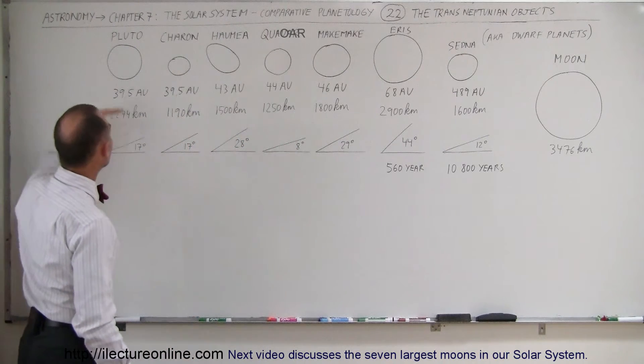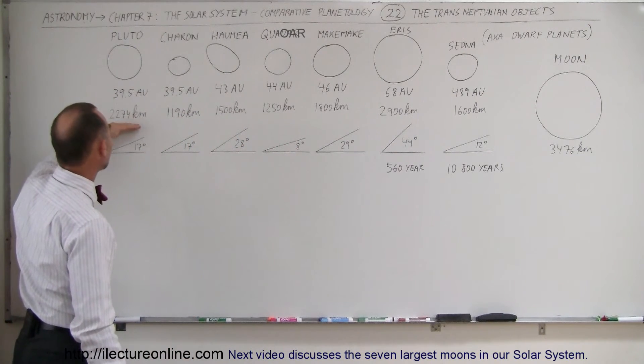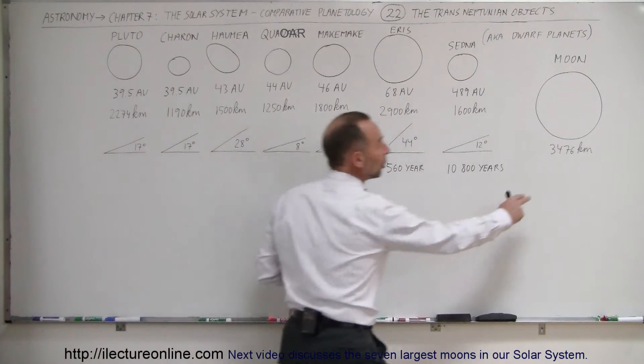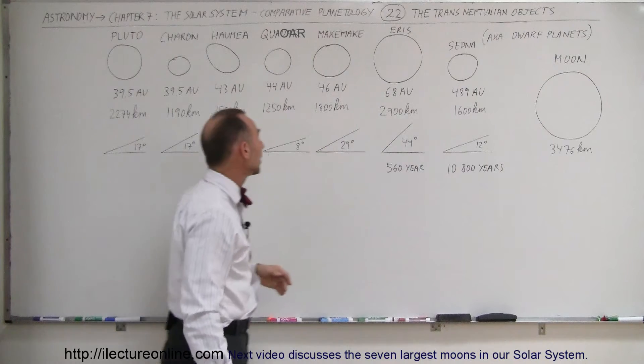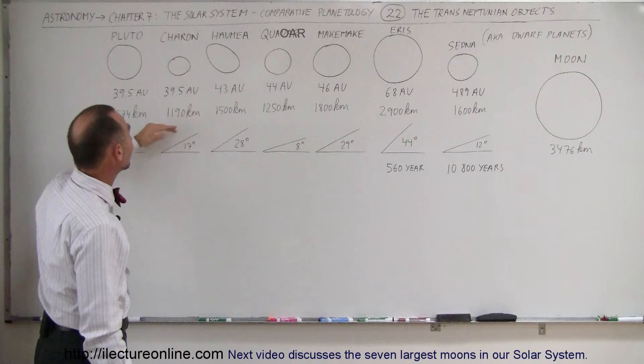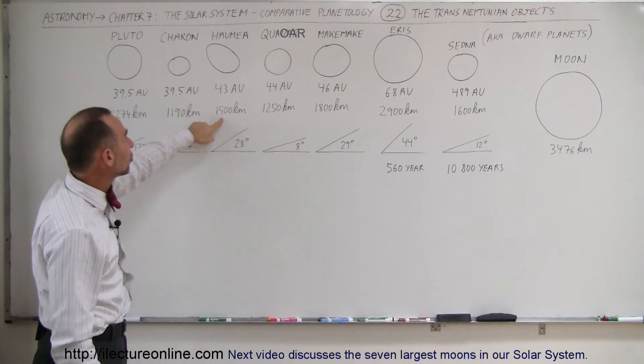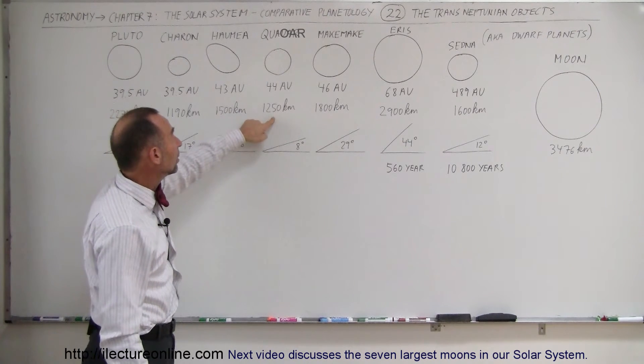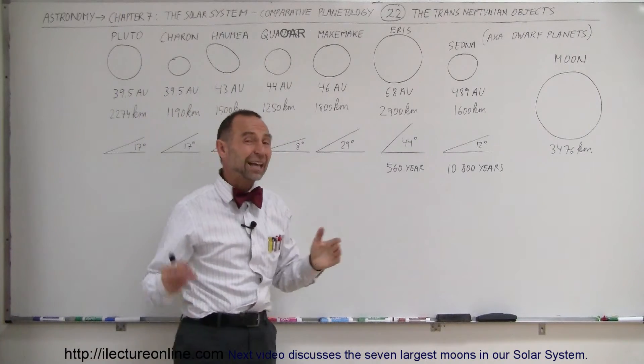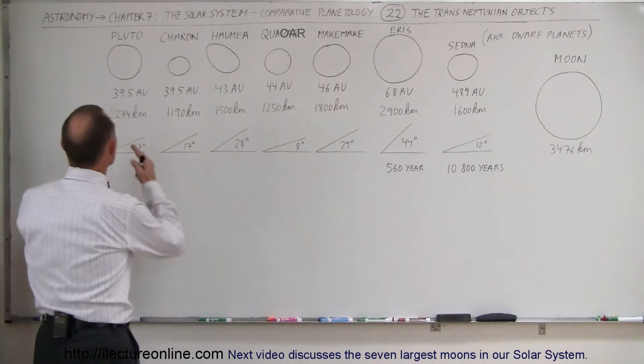Relative size. Notice that Pluto was the largest for a while at 2,274 kilometers, compared to the moon. It was about two-thirds the diameter of the moon. Notice that Charon is a very large moon compared to Pluto, about half the size. Haumea, a little bit bigger than Charon. Quaoar, Makemake. And then finally, Eris at 2,900 kilometers across, which was bigger than Pluto.